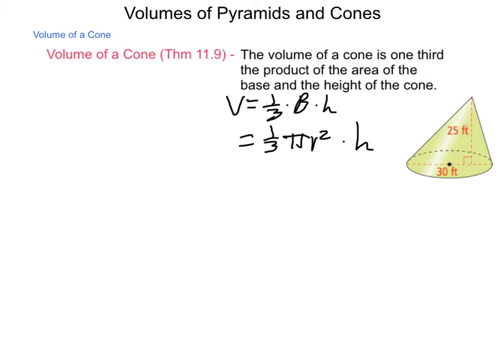So, for a pyramid and a cone, those volumes work for either right figures or a more oblique one, like what we see here.